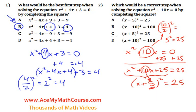So this is our answer. x plus 5 squared equals 25. Bye-bye.